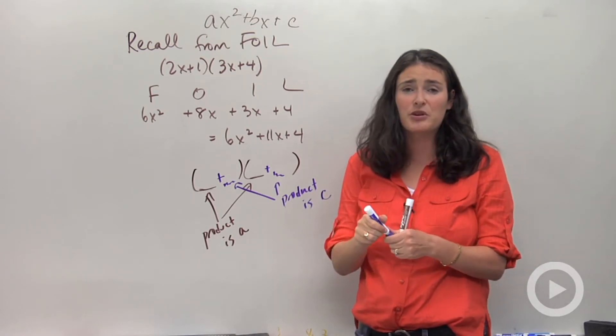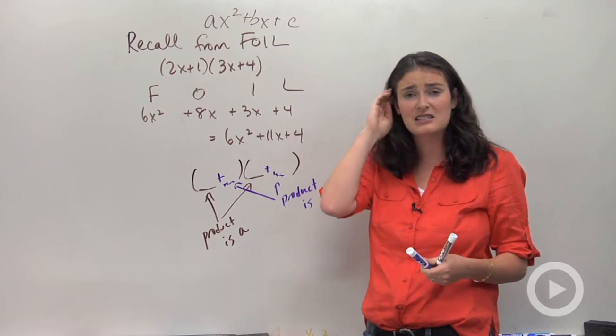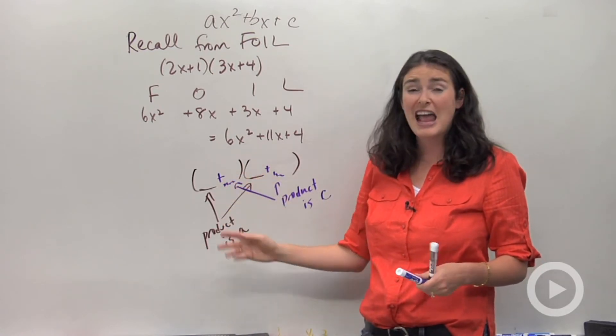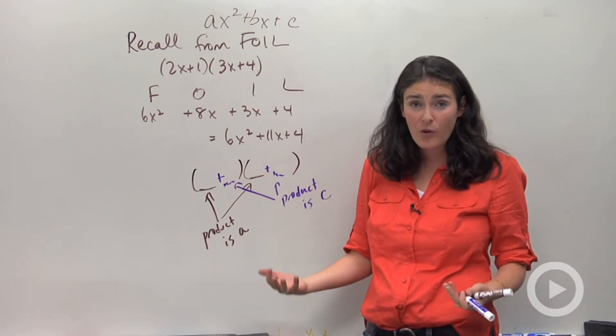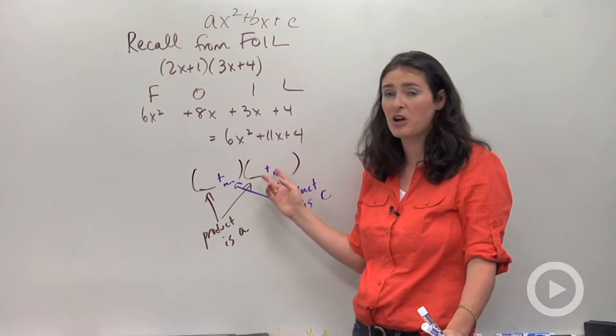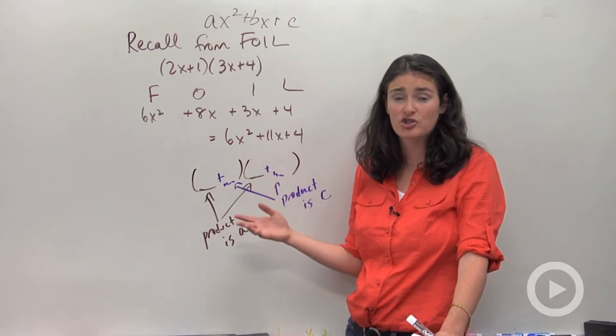And then you're going to have to mess around with the positive signs and negative signs with how you order things. And you're going to have to check your work by foiling until you find some combination that gives you your original trinomial.